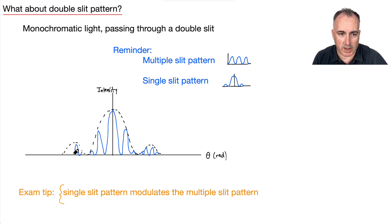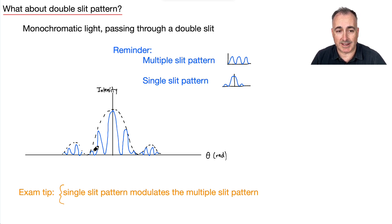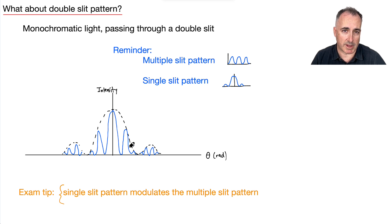So this is kind of cool — if you saw a graph like this and were asked about it, you could say this is a sign that there is a single slit pattern modulating a multiple slit pattern.